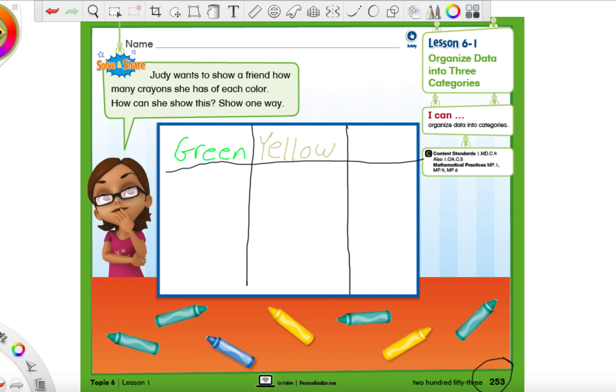And your chart doesn't have to be perfect. See mine is not perfect. So it's okay. And this is what our chart is going to look like. It's going to have three spaces. So first you write green. And then we're going to write yellow. Then we have green, yellow, and our last color we're going to be working with is blue.